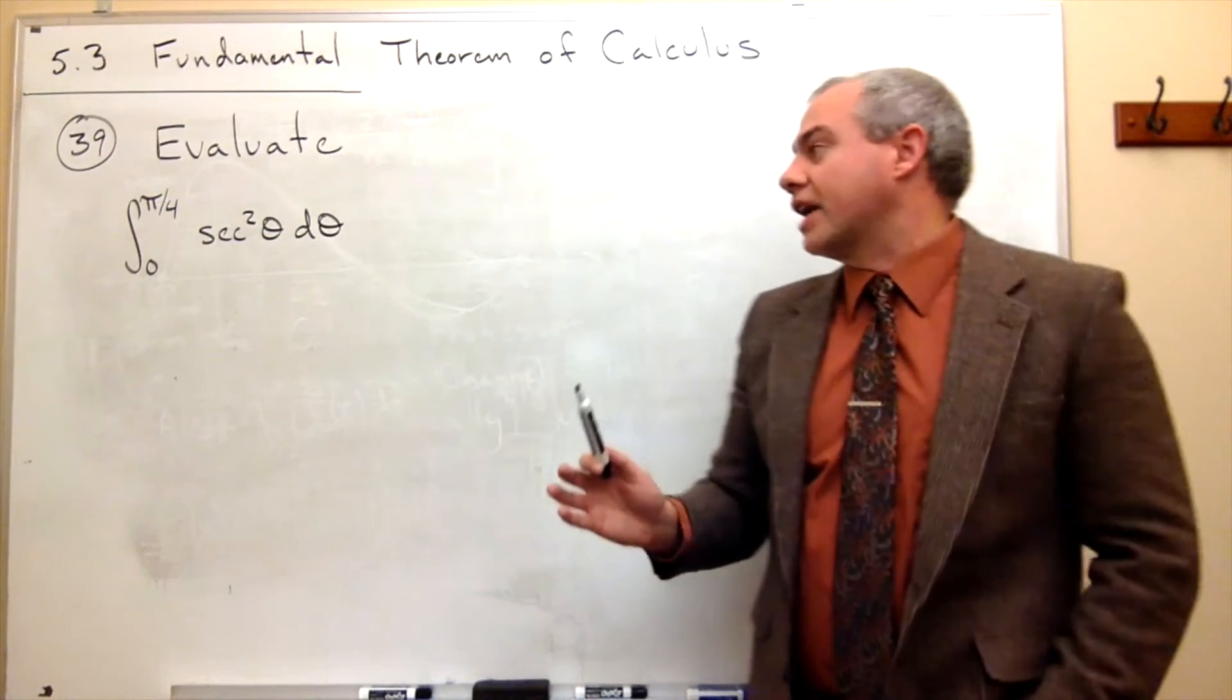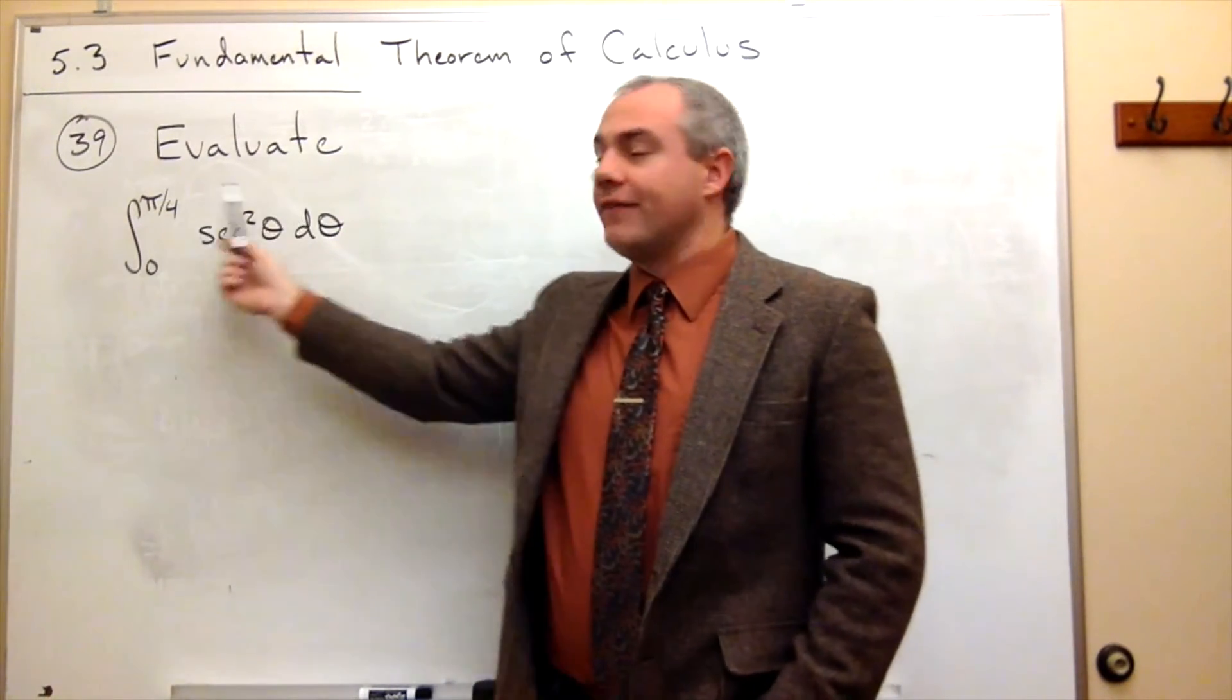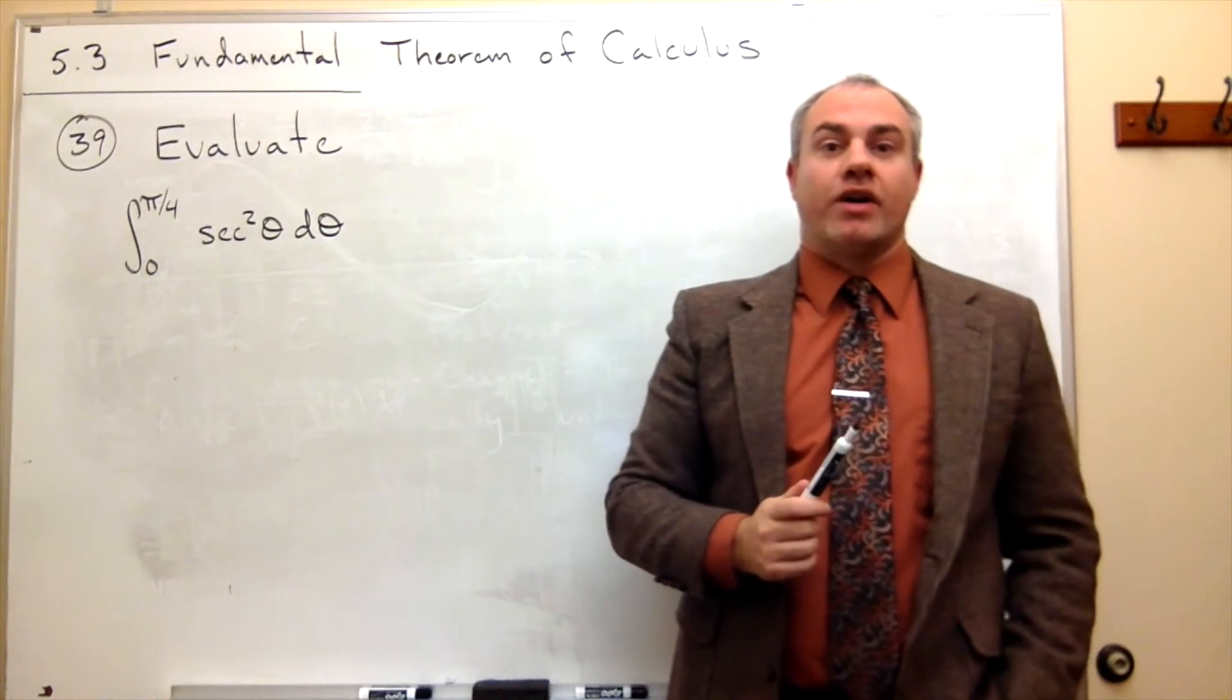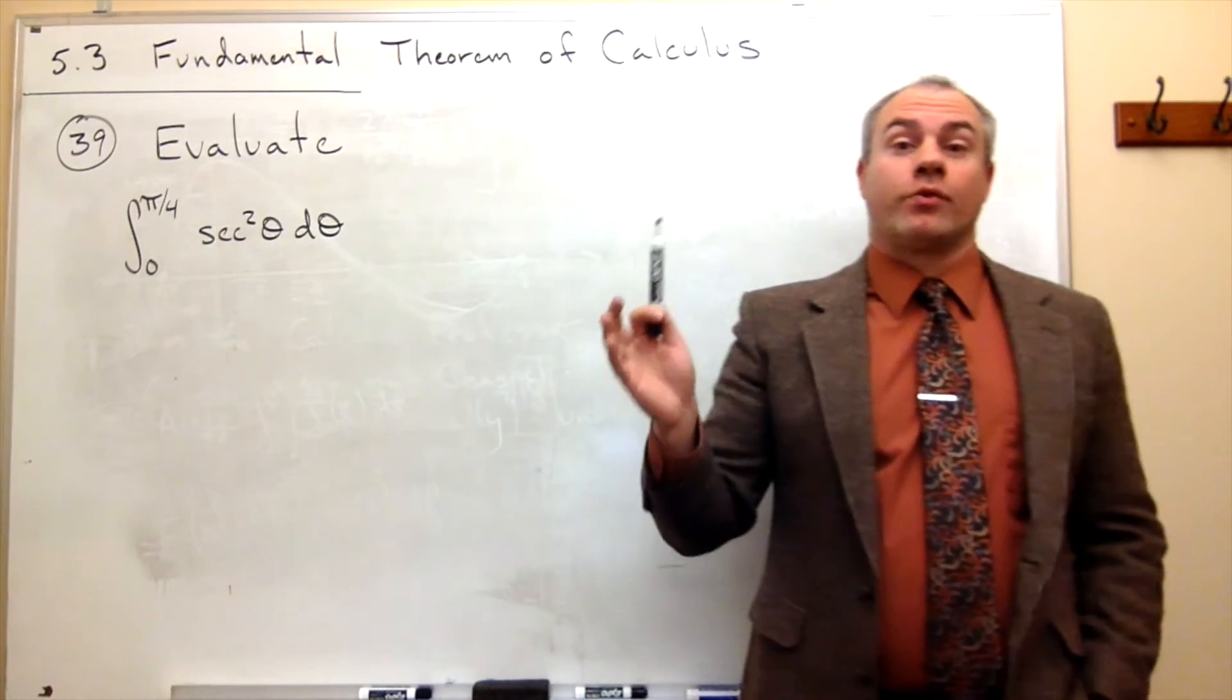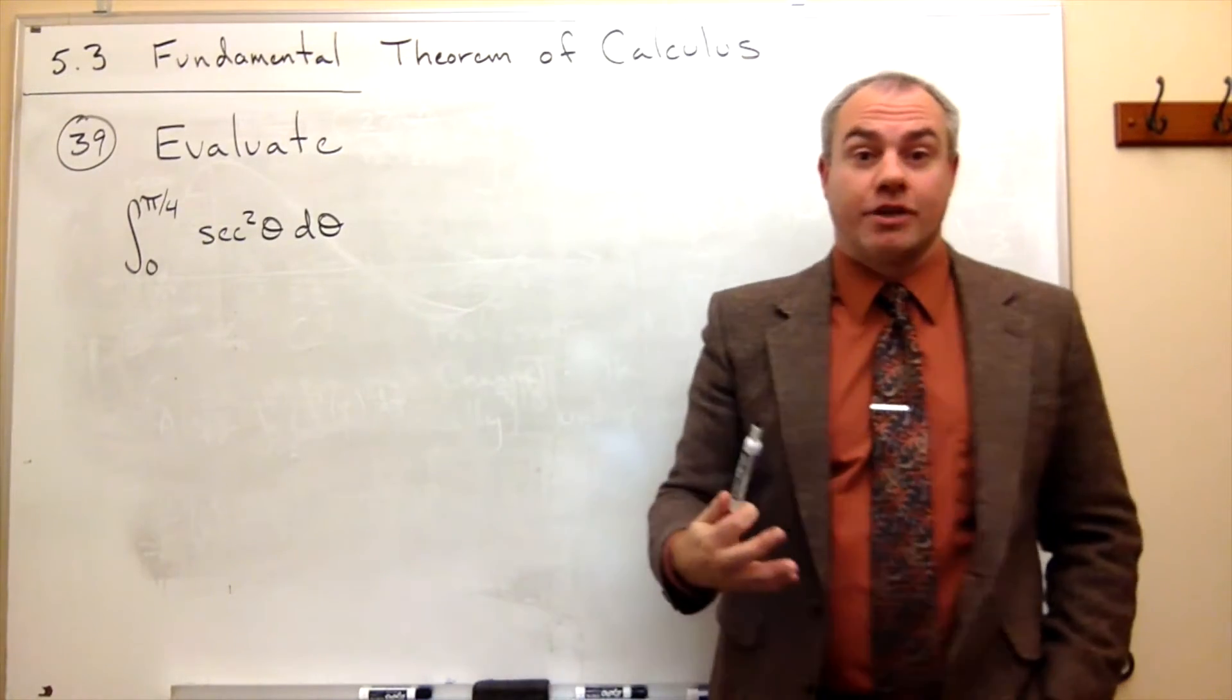The way that we're going to do that is the first thing we need to know is what is an antiderivative of secant squared of theta. In other words, whose derivative is secant squared of theta? Well, tangent of theta.